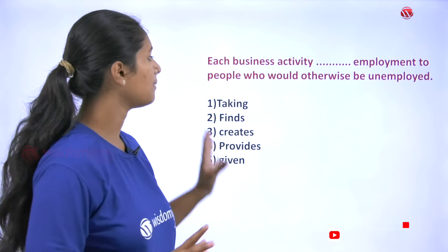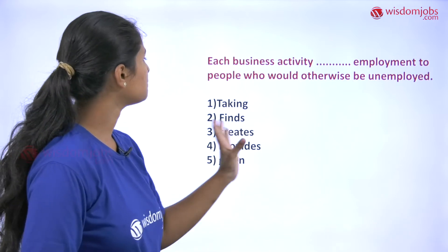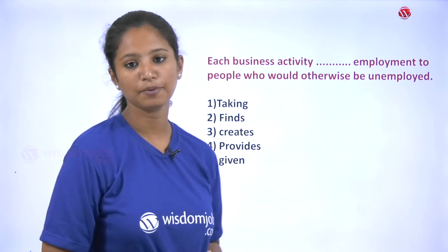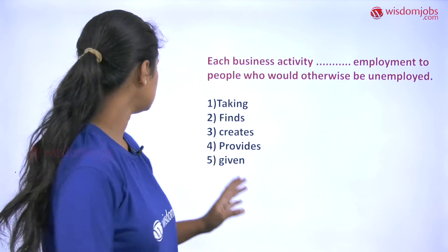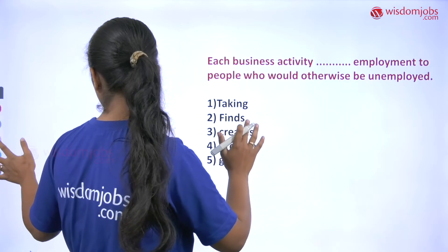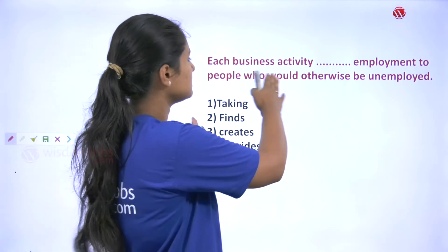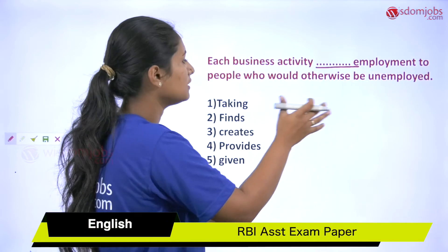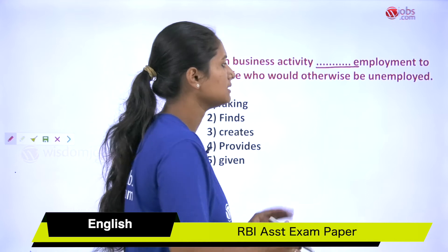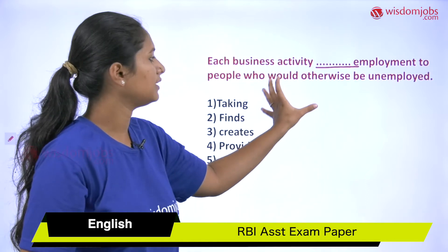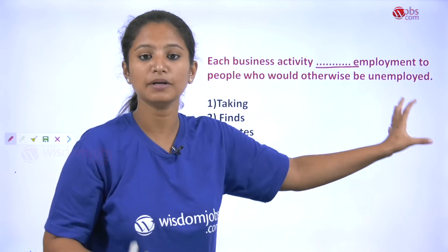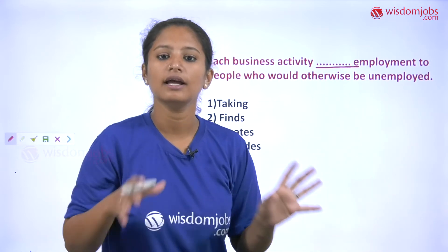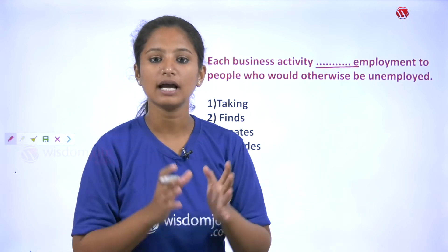Let us read the question. Here a sentence is given: 'Each business activity dash employment to people who would otherwise be unemployed.' That means in this sentence itself you can find the option. Each business activity — here a dash is given — employment to people who would otherwise be unemployed. So this means each business activity gave something, gave employment to those people; otherwise, if this business activity is not there, all those people will be unemployed.